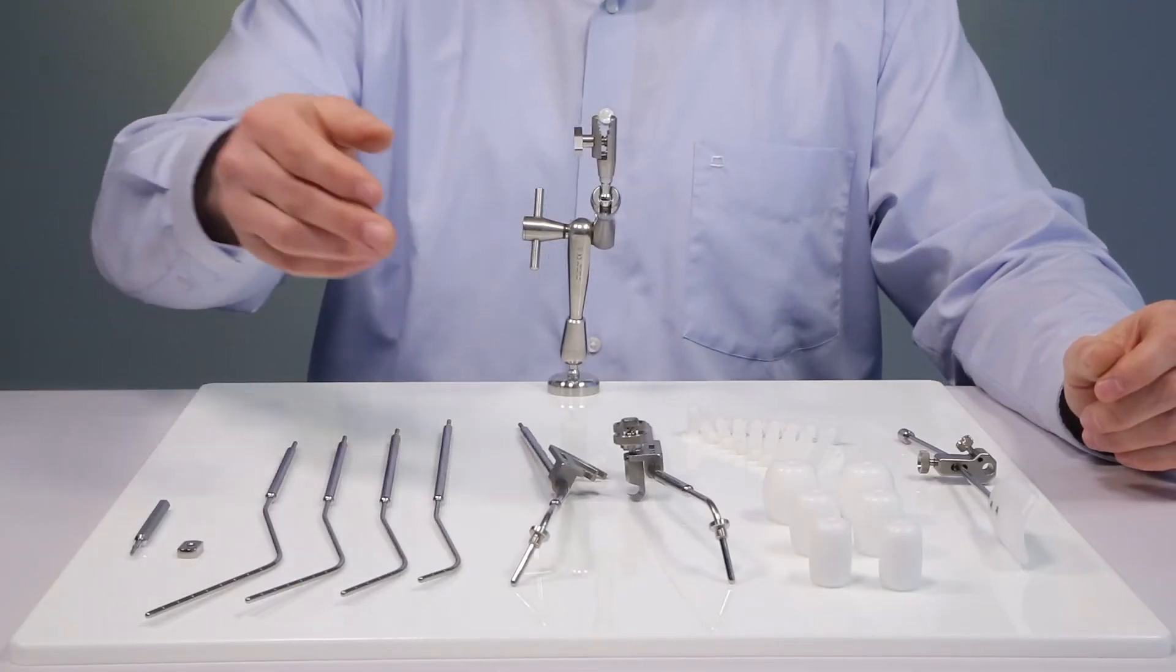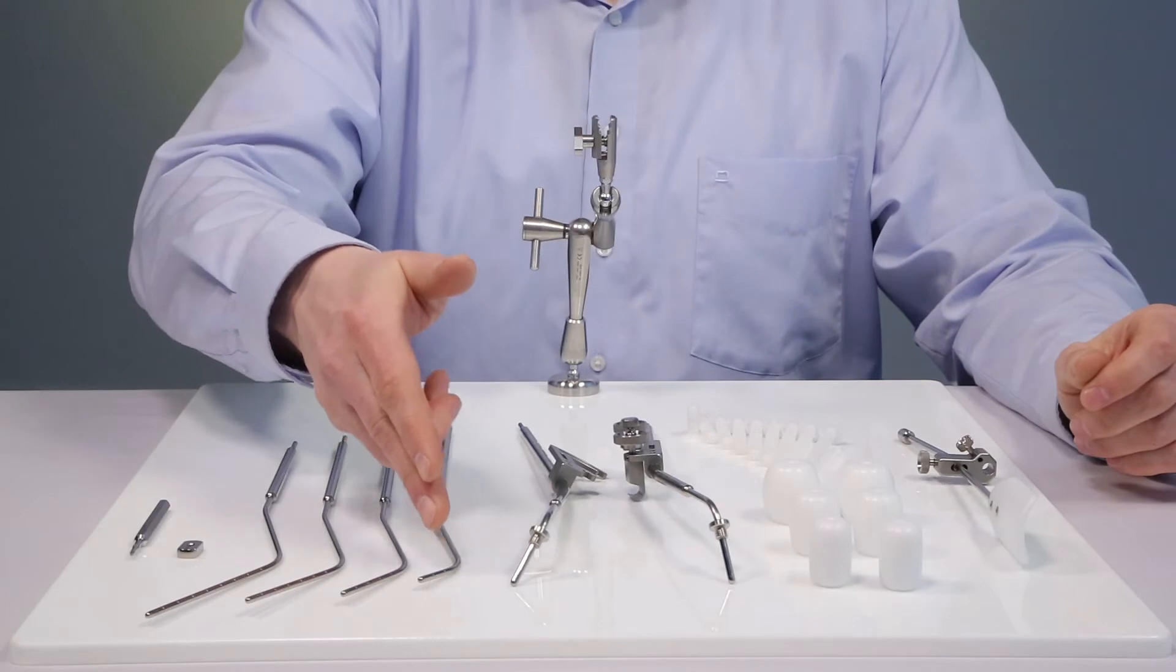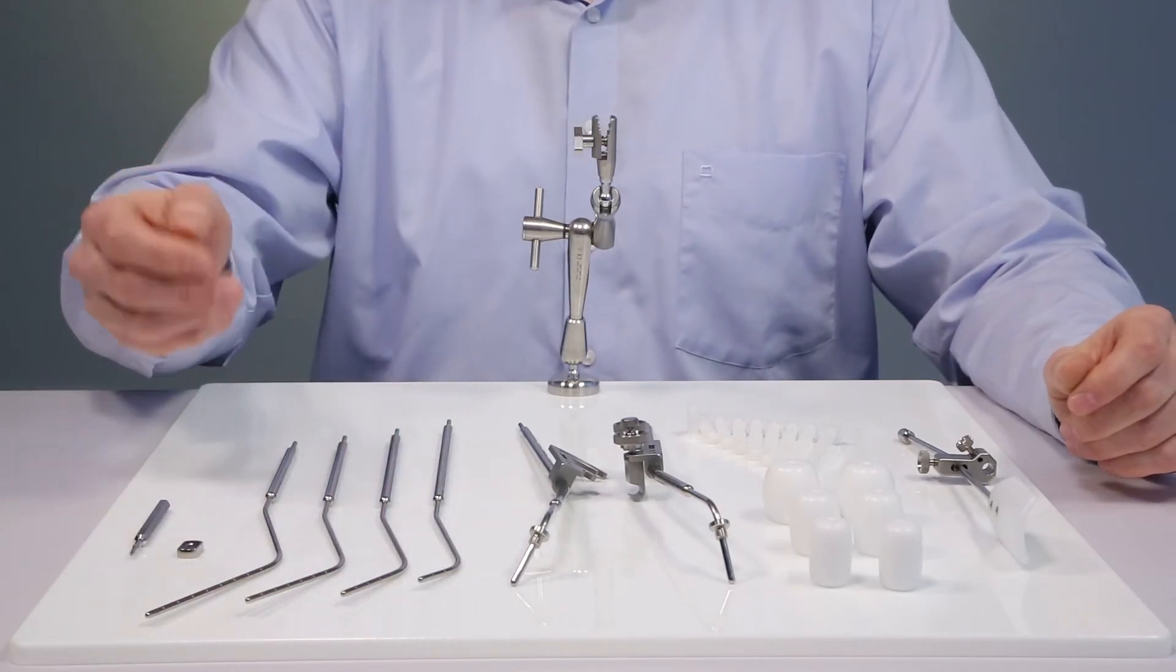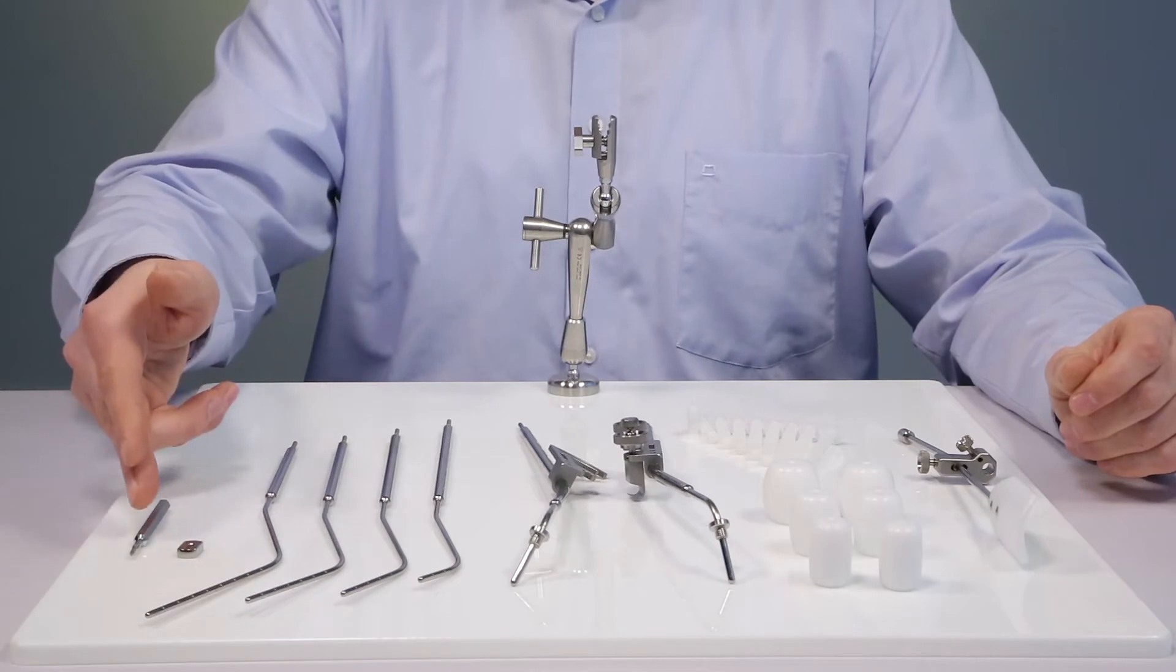The set consists of four intrauterine tubes in 2, 4, 6 and 8 centimeter length, a cervical stop and a corresponding Allen wrench.